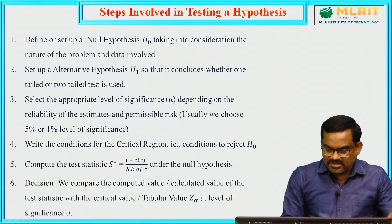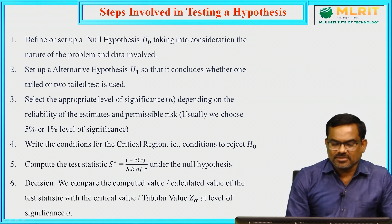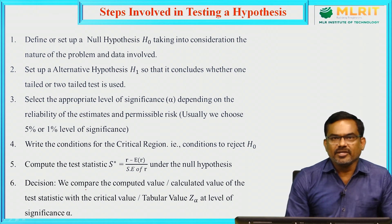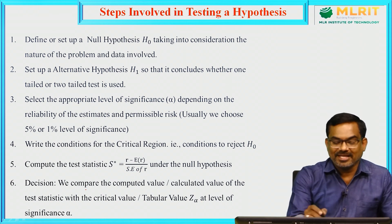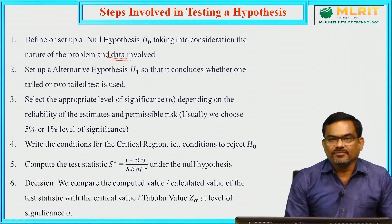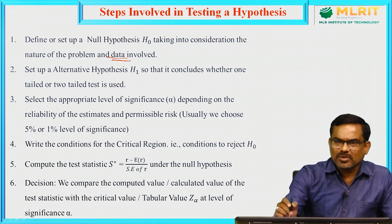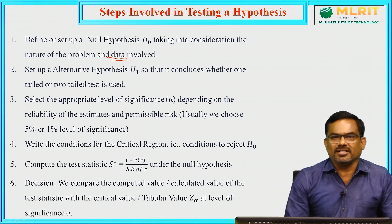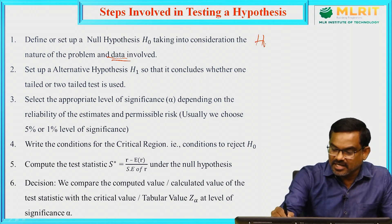Now let us discuss each of the six steps in more detail. The first step is the null hypothesis — define or set up a null hypothesis H naught, taking into consideration the nature of the problem and data involved. Depending on the given data, we consider the null hypothesis. Simply put, the actual statement which is to be tested is called H naught, and it will be clearly given in the problem.